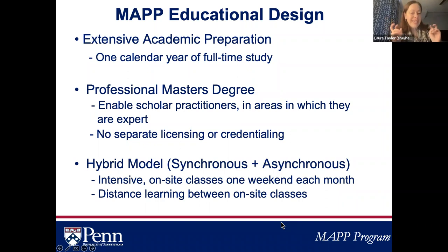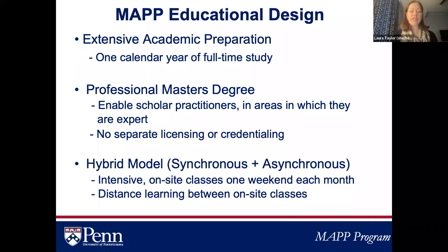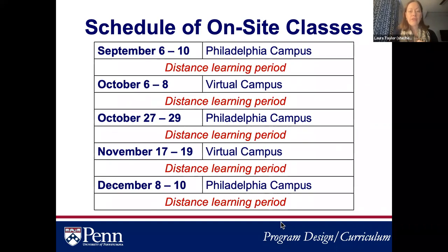MAP is structured as a hybrid model that includes a combination of synchronous on-site classes and asynchronous distance learning between on-sites. When we say on-site, we mean synchronous learning, be it on campus or in our virtual classroom. A decision was recently announced for the MAP program format beginning next fall in academic year 23-24: synchronous on-site classes will alternate between formats, held both on our Philadelphia campus in-person and on our virtual campus in a Zoom classroom.